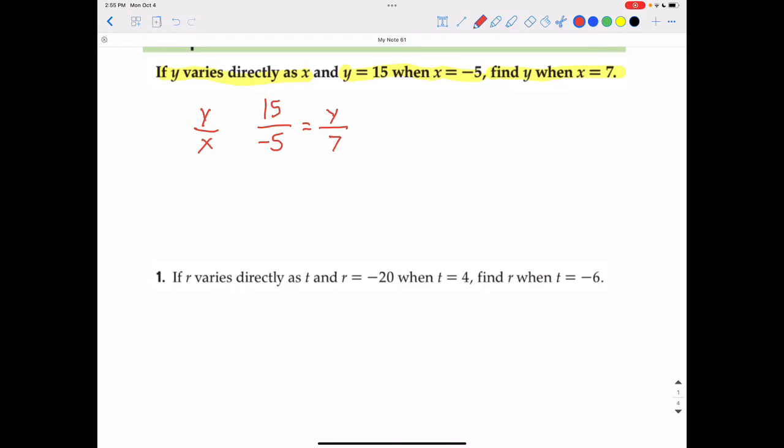We solve this by cross-multiplying and dividing. So negative 5Y is going to equal whatever 15 times 7 is, which is 105. And then we divide by negative 5 to get Y equals negative 21.